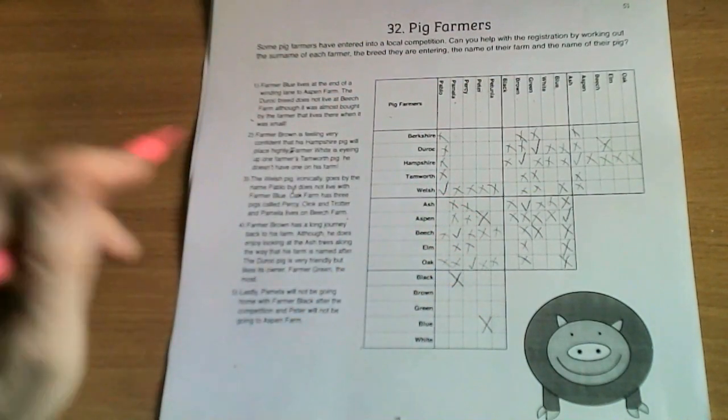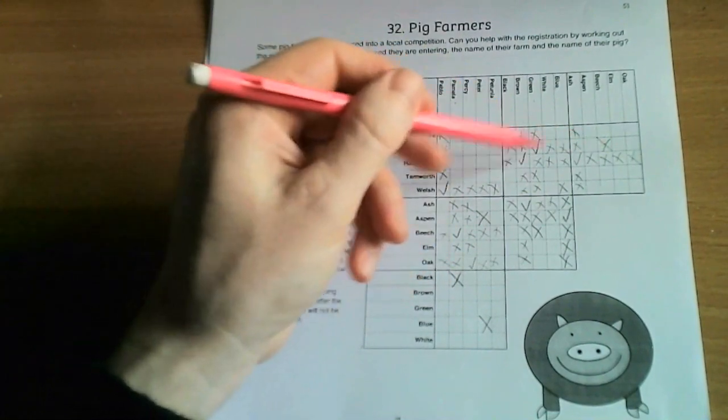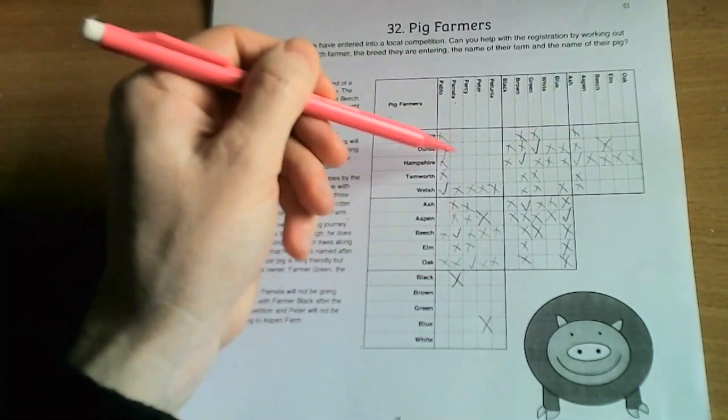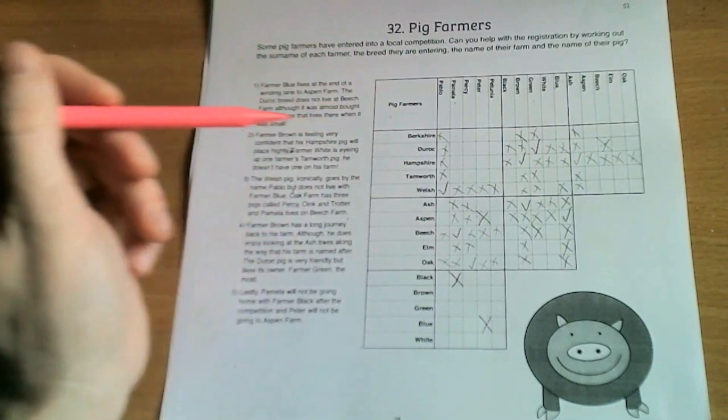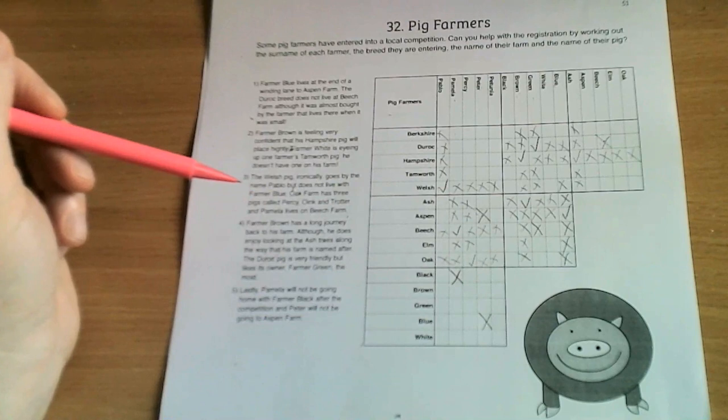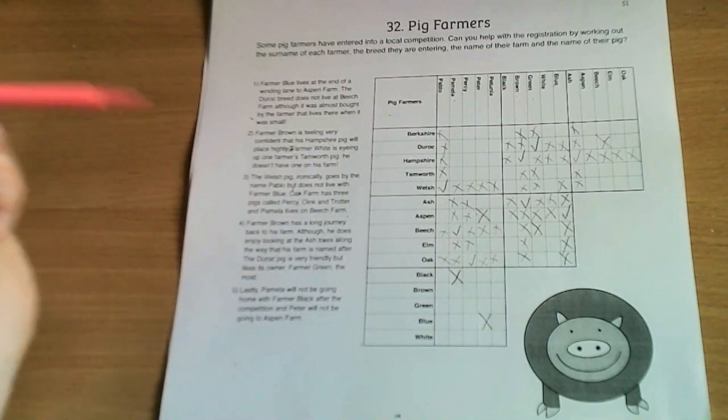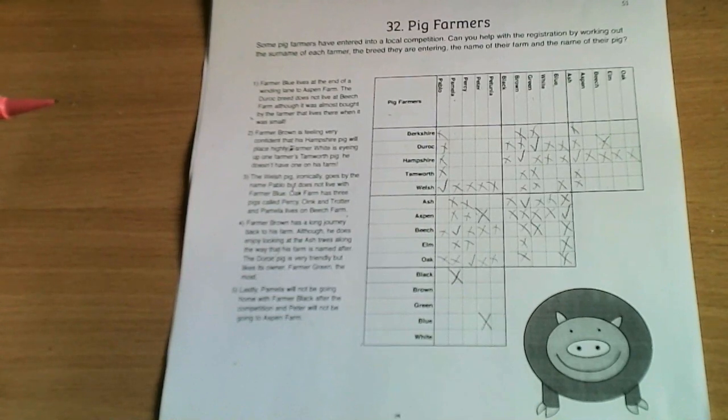And we just continue in this manner, going through using the cross-reference table to see where we have multiple pieces of information for each item, and then seeing if we can use that to make deductions elsewhere in the grid. Now it'd be quite slow to go through and solve it all on camera link by link, but that's the process. It's just a case of continuing to make those deductions until you find either you've solved the puzzle or you might notice that there's only one entry left somewhere in the grid for you to put a tick box.